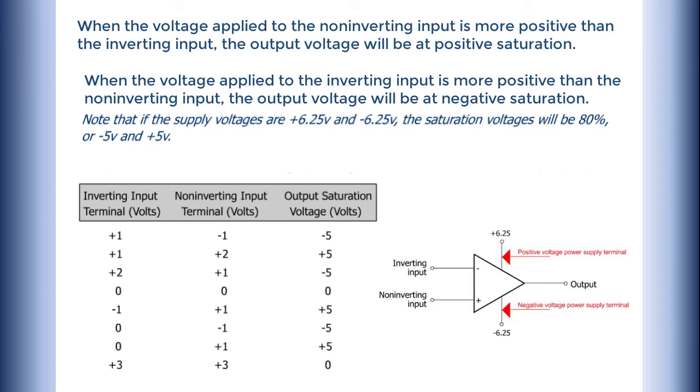Note that if the supply voltages are +6.25V and -6.25V, the saturation voltages will be 80%, or -5V and +5V.